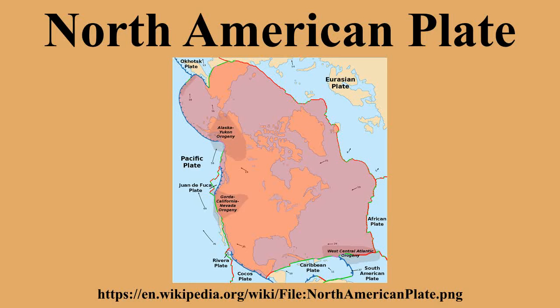The Juan de Fuca, Explorer, Gorda, Cocos, and Nazca Plates are remnants of the Farallon Plate. The boundary along the Gulf of California is complex. The Gulf is underlain by the Gulf of California Rift Zone, a series of rift basins and transform fault segments between the northern end of the East Pacific Rise at the mouth of the Gulf and the San Andreas Fault system in the vicinity of the Salton Trough Rift and Brawley Seismic Zone.